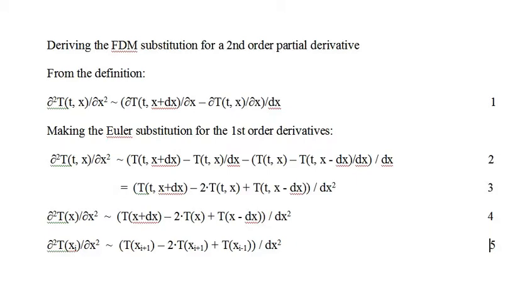Since in steady state temperature does not vary with time, we drop the time variable T from the equation to get equation 4, and applying the equation to the grid points xi we get equation 5.